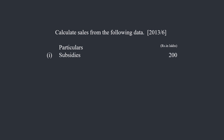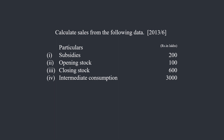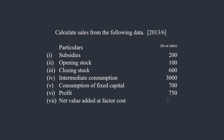The given information is as follows: Subsidies 200 lakhs, Opening stock 100 lakhs, Closing stock 600 lakhs, Intermediate consumption 3000 lakhs, Consumption of fixed capital 700 lakhs, Profit 750 lakhs, and Net value added at factor cost 2000 lakhs.